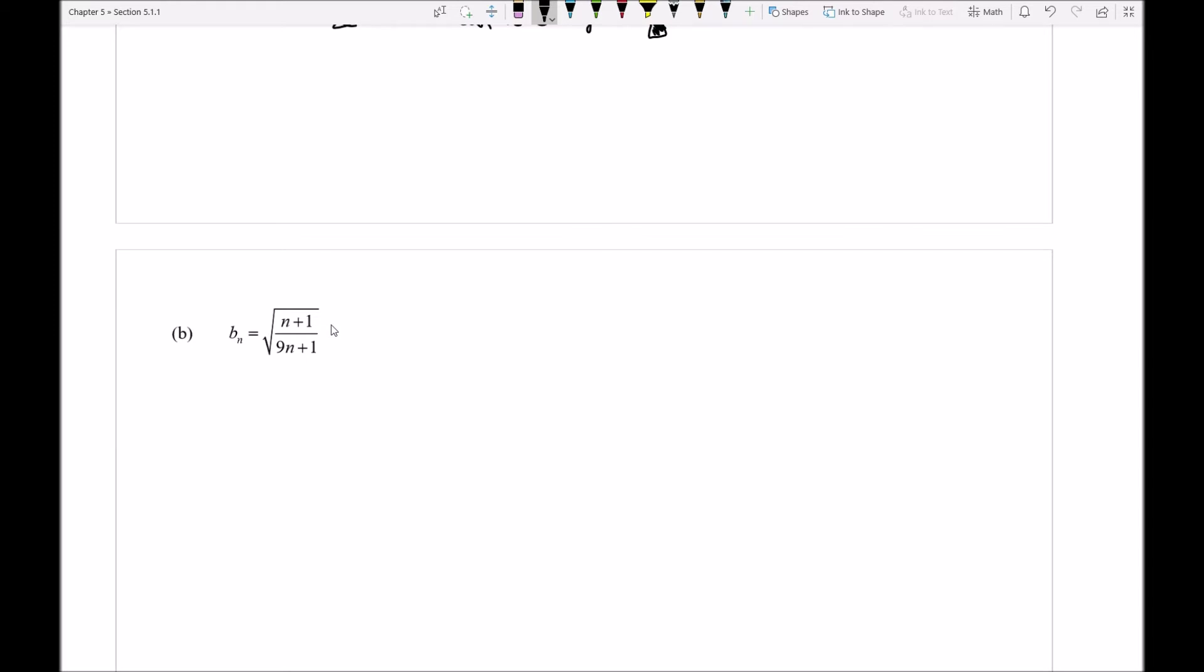Now I can see down here maybe on part b that looking at individual terms of the sequence might begin to get a little bit messy. In fact, I could probably start to guess right away these aren't probably going to be oscillating between two different values. So maybe I can take a slightly different approach here.